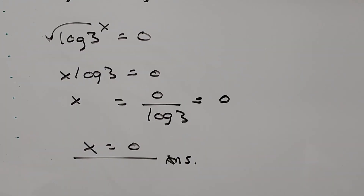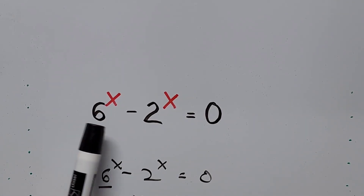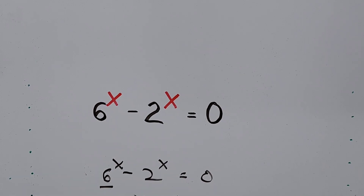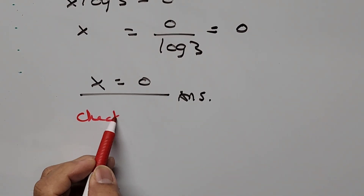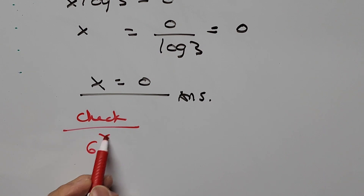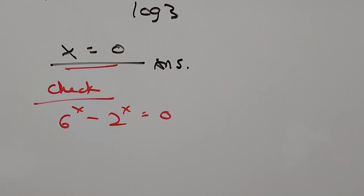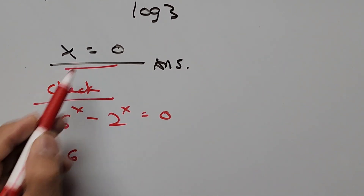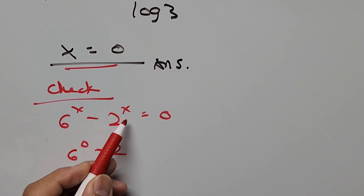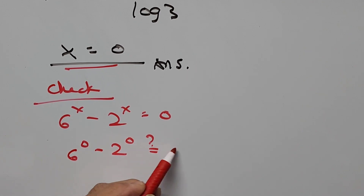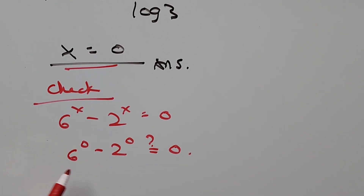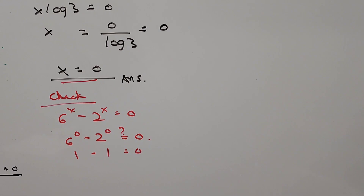That is our answer. Now let's check: substituting x equals 0 into the original equation, 6 to the power of x minus 2 to the power of x equals zero. We get 6 to the power of 0 minus 2 to the power of 0 equals zero. Since any nonzero number to the power of 0 is 1, this becomes 1 minus 1 equals zero, which is true.